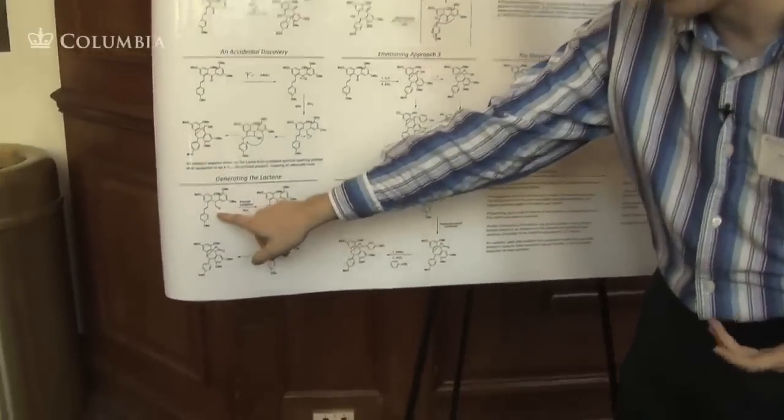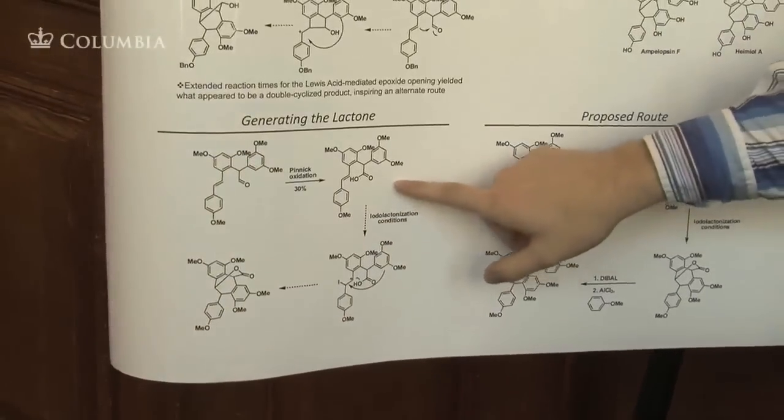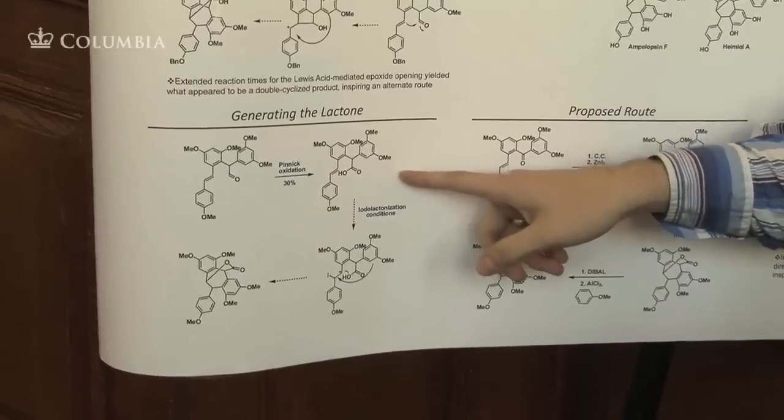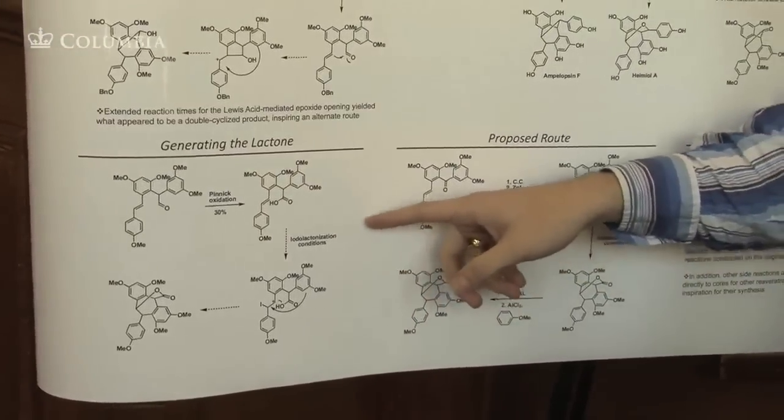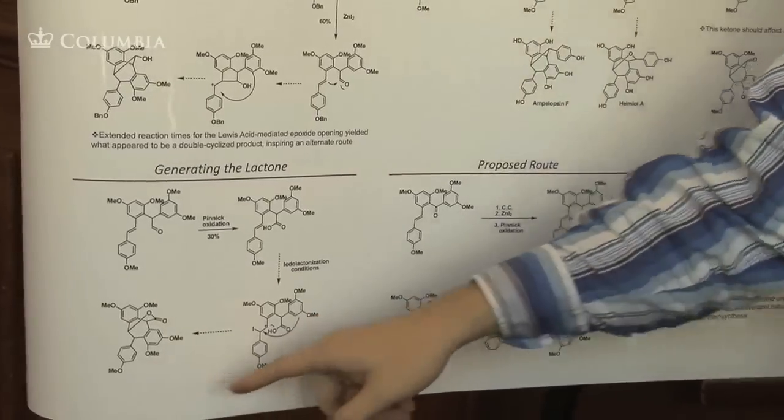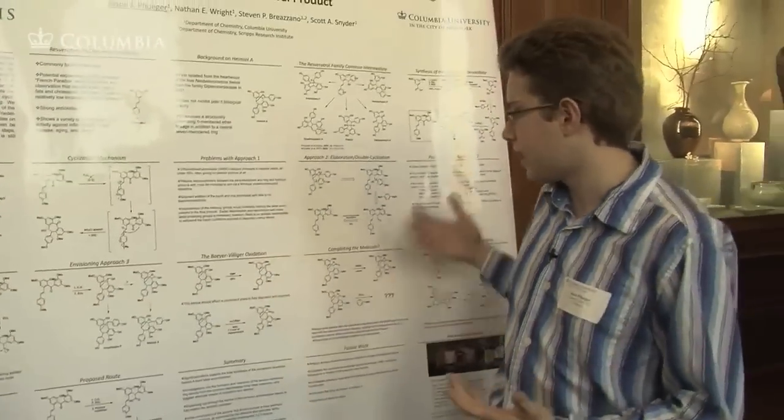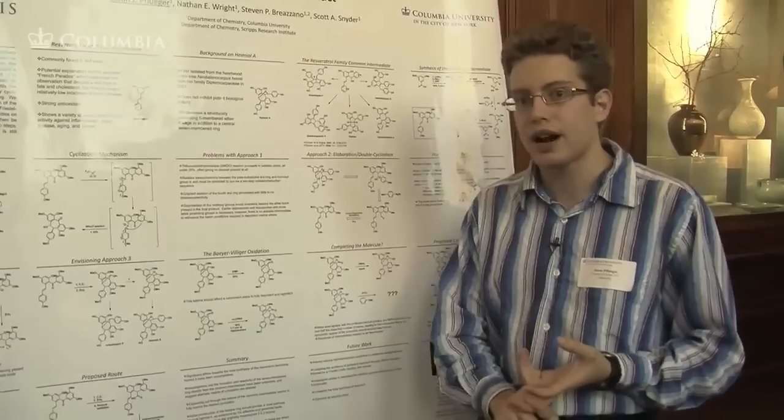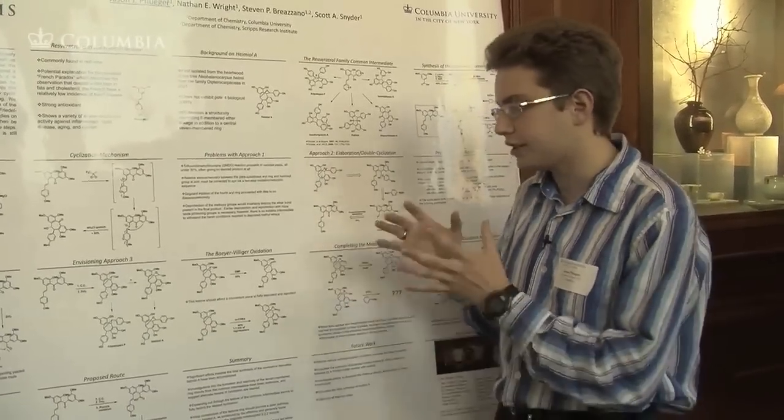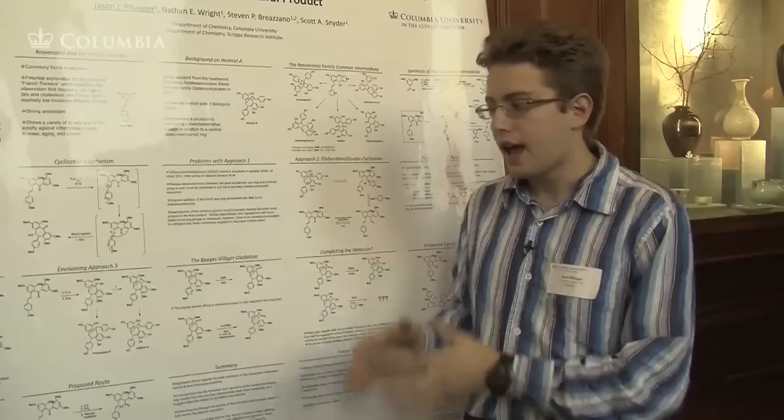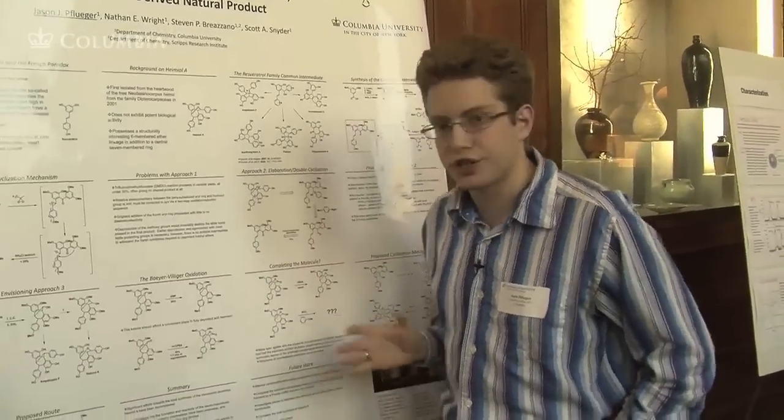Using the aldehyde, which we can get from our Corey-Chaykovsky zinc iodide reaction, we can oxidize that using the Pinnick oxidation to the carboxylic acid. I'm currently attempting various iodolactonization conditions to generate the desired lactone in a single step from which we can use the chemistry we've already established, namely the reduction and the Friedel-Crafts addition to get us to our natural product. That's currently where the project is now and the work I'm currently doing, and hopefully we'll be able to finish in the near future.